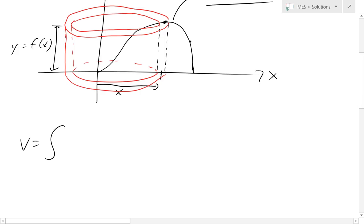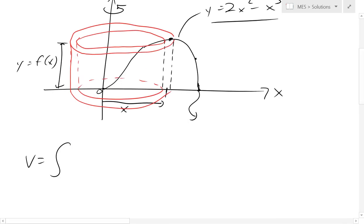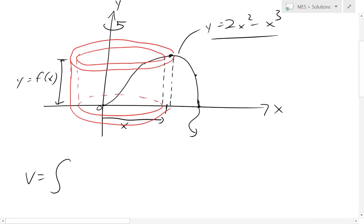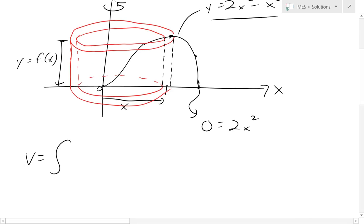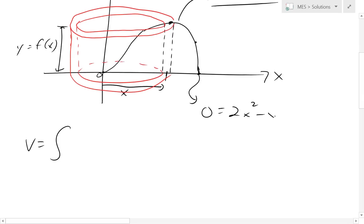It's going to be from this point here, from 0 up to this point. And you could solve this, because that's where it crosses 0, and you could write it as, just solving for this function. So 0 equals 2x squared minus x cubed. So we're going from 0 to this number.